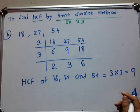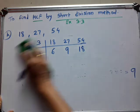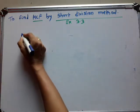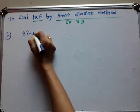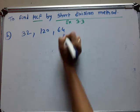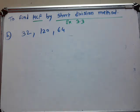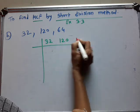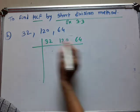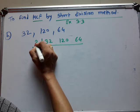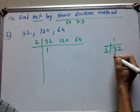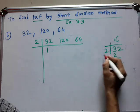This is the way we find the SCF by the short division method. Suppose we take one more example. We take the numbers 32, 120, and 64 — this is question number H. Now you have to check — these are all even numbers. So first you have to arrange the numbers: 32, 120, and 64. These are all even numbers, so first divide by 2. 2 times 16 are 32.